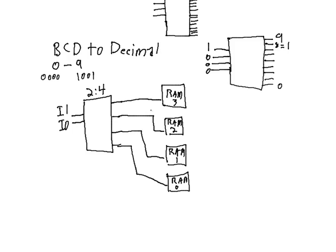But this 2 to 4 decoder is going to use two bits to select which one of these four outputs, 3, 2, 1, and 0, is going to be activated.